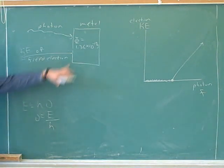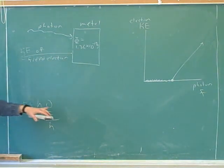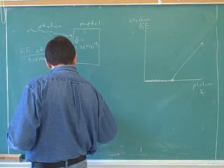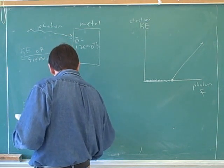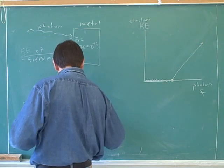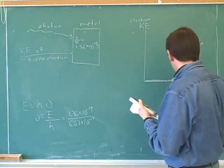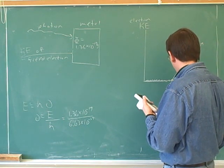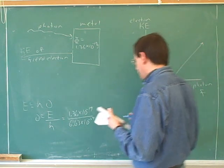What do I plug in for E? This work function. So, you would do 1.36 times 10 to the negative 19 over 6.63 times 10 to the negative 34. So, I did that, and I got 2 times 10 to the 14.